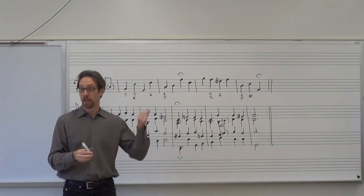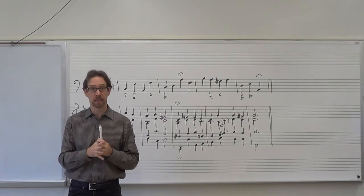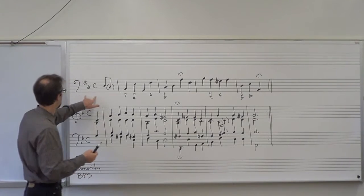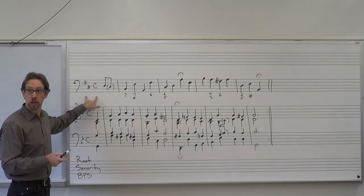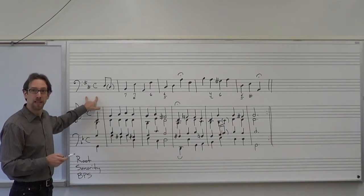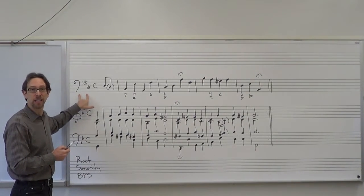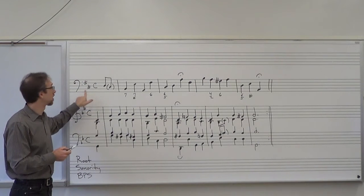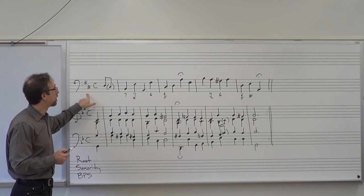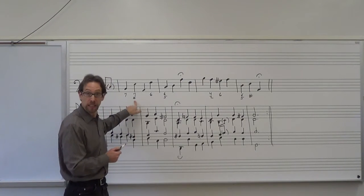So we're going to go over some of these examples with how to realize figured bass, writing out base position symbols. This particular example is a good challenge because it's not in the key that the key signature indicates — it's not in D major or B minor. Because of that, we start having accidentals written into the figured bass.